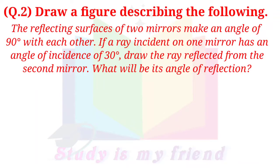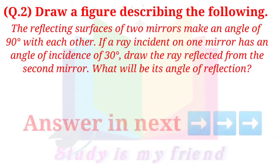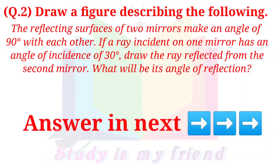4. The reflecting surfaces of two mirrors make an angle of 90 degrees with each other. If a ray incident on one mirror has an angle of incidence of 30 degrees, draw the ray reflected from the second mirror. What will be its angle of reflection?